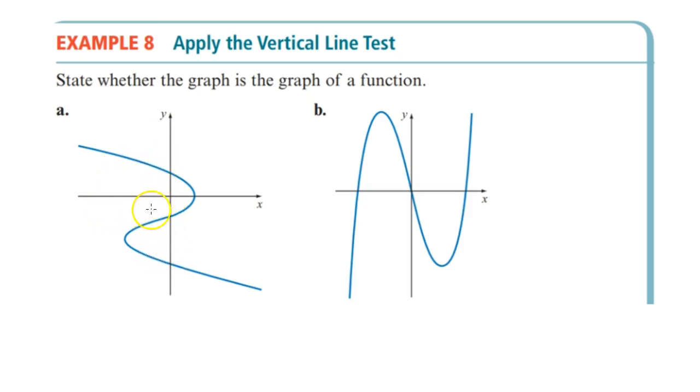And that's what the vertical line test is testing. At any specific x value, if there's more than one place that your function is crossing at any specific x value, then it's not a function. That's exactly the same definition as mentioned in the first slide in a more graphical form.